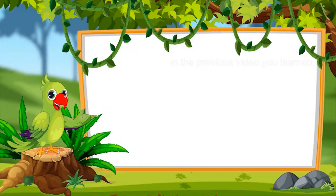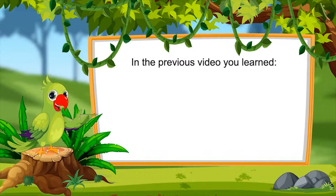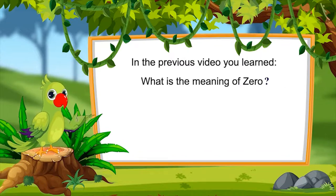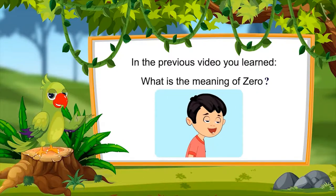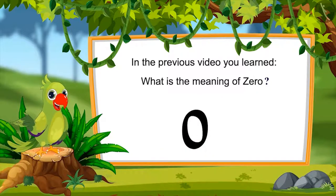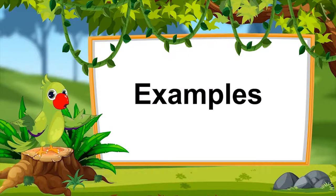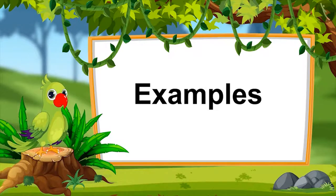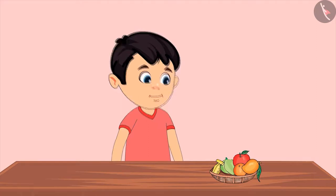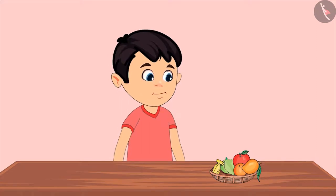Children, in the last video you learned what is the meaning of zero — when there is not a single object left, it is called zero. In this video we will see some examples of zero, in which we will develop an understanding of objects decreasing one by one.